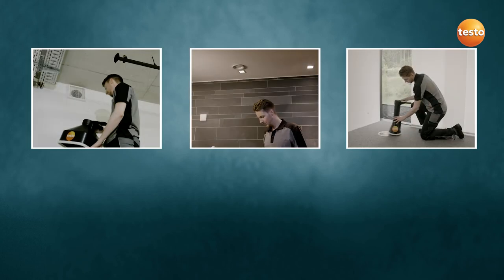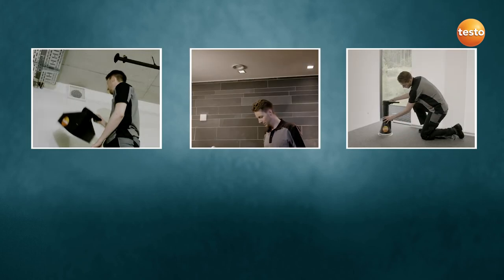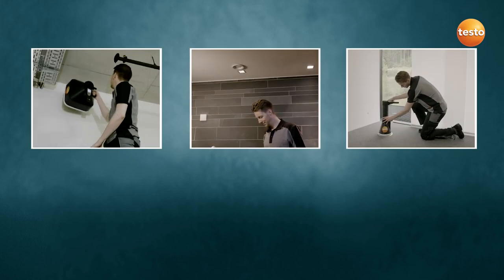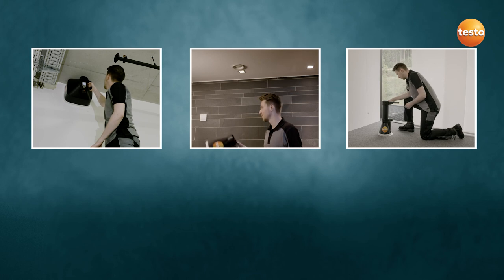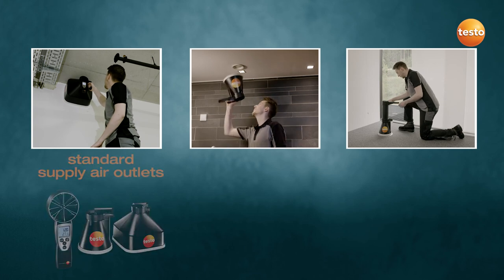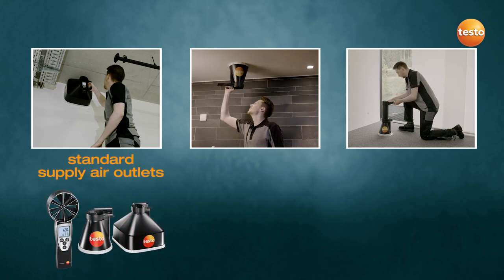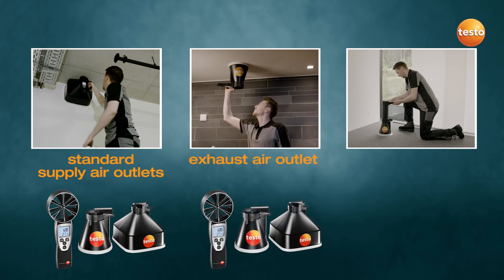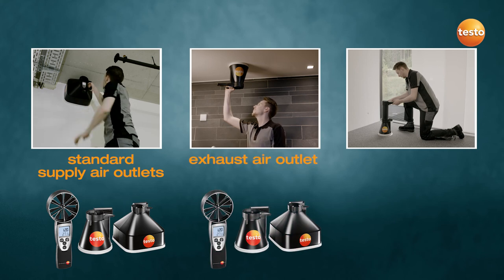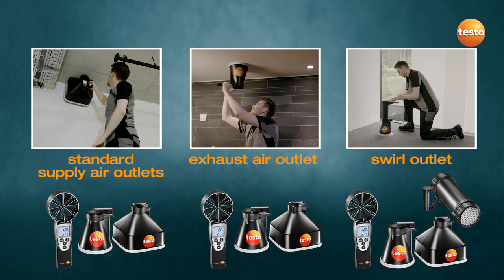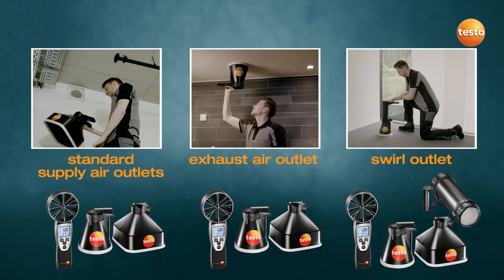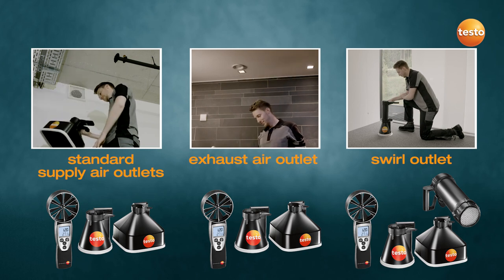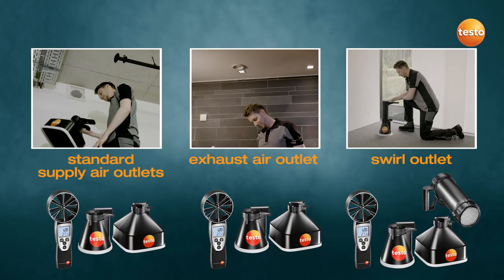Let's summarize which measuring tasks you can carry out with the Testo 417. First, measure faster at standard supply air outlets. Second, achieve accurate values at exhaust air outlets. Third, achieve utmost accuracy at swirl outlets, even with turbulent airflow.